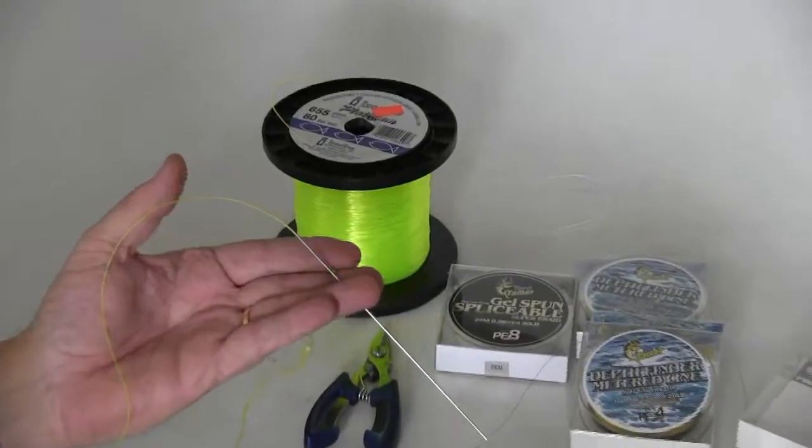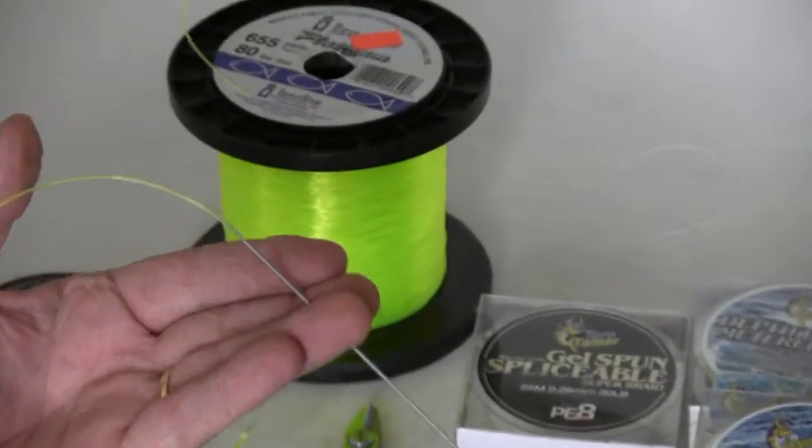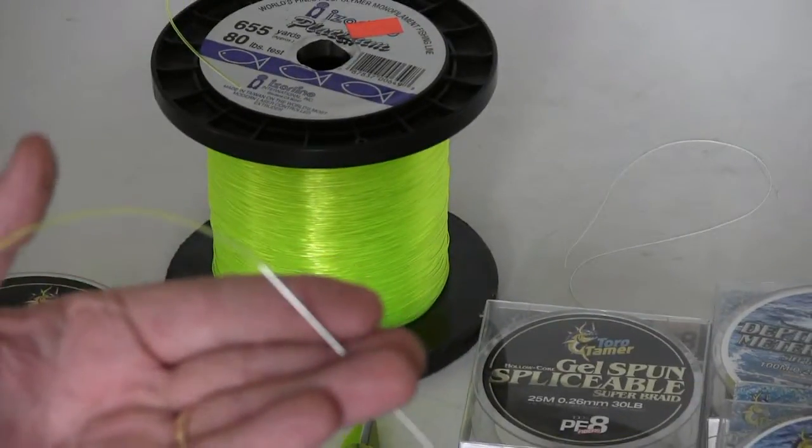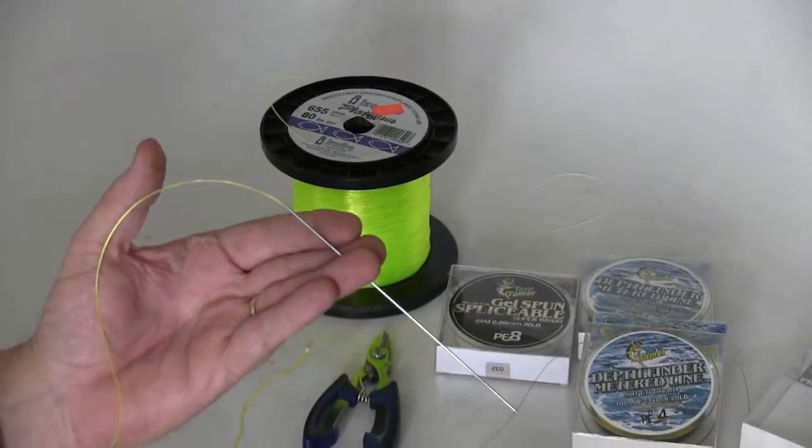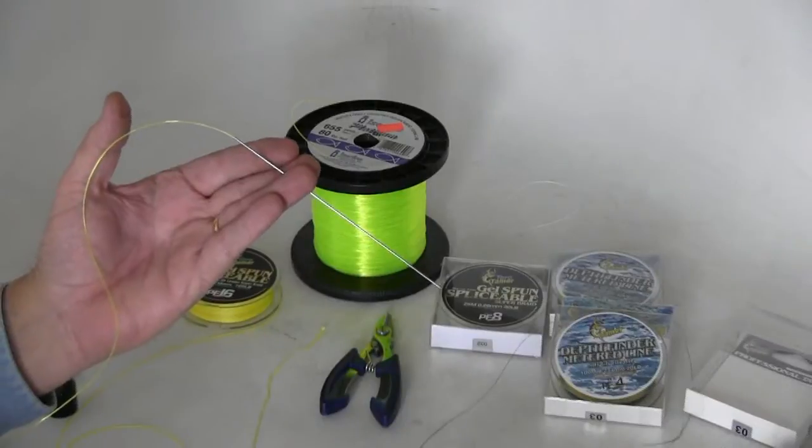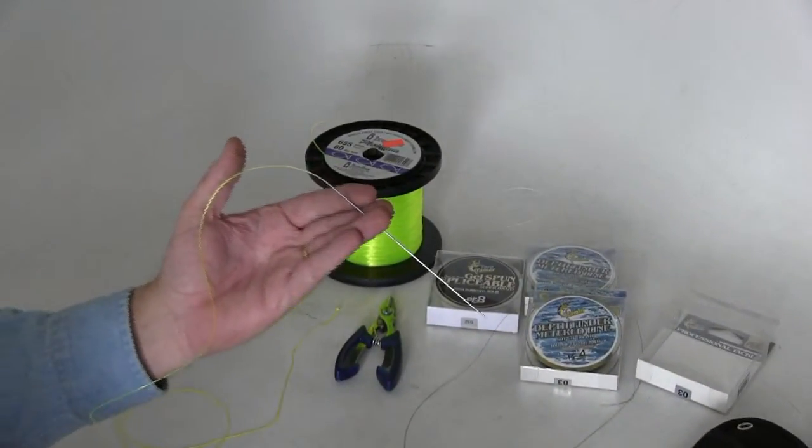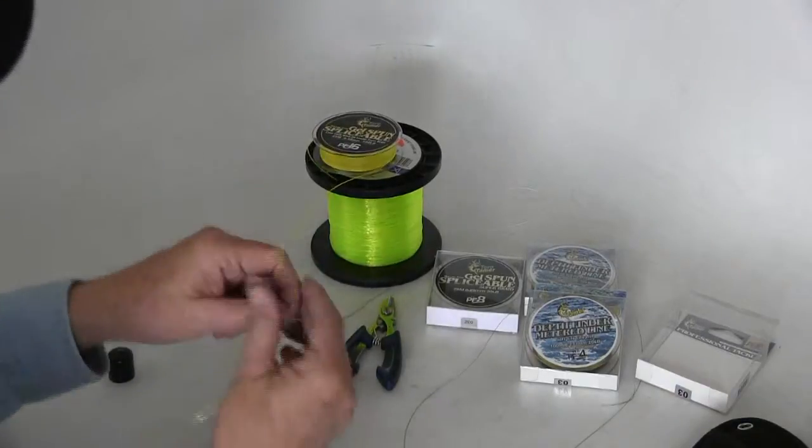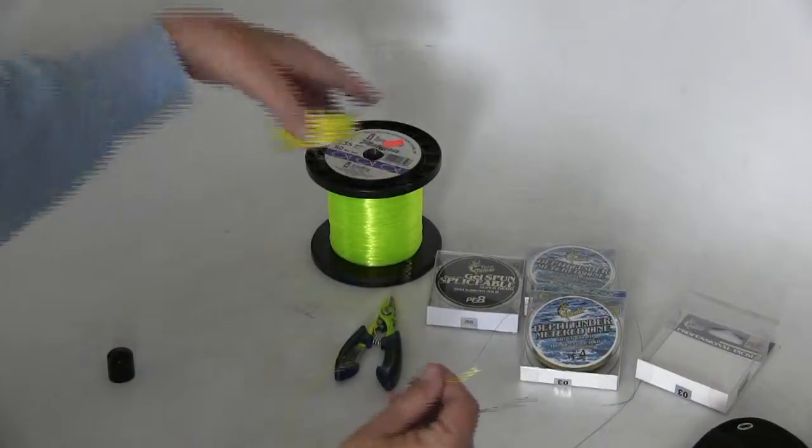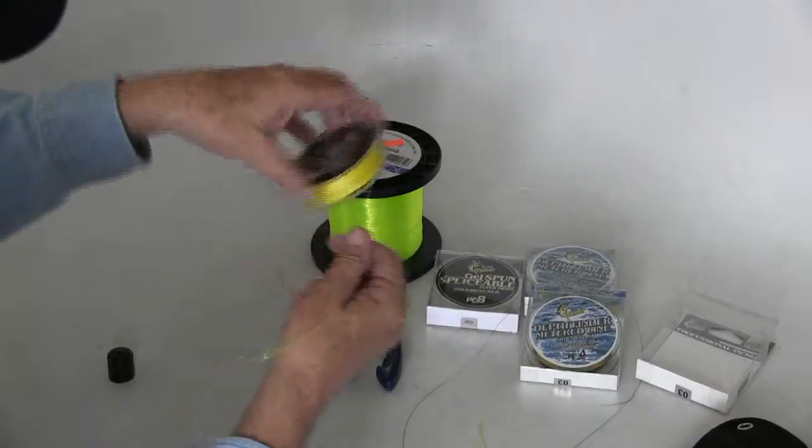Once that line is inserted into the appropriate size needle, and I mean appropriate size, you want that needle you're using to be the skinniest one that that leader will fit into. If the leader is a good deal skinnier than the needle, you can always put a little bend near the tip of that line. Just go ahead and bend it, and that will help keep it inside the needle that much more.